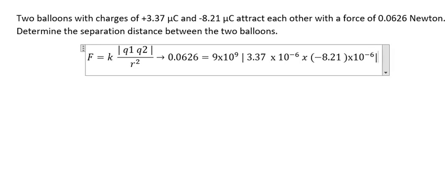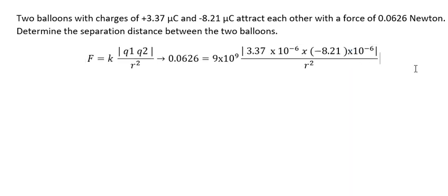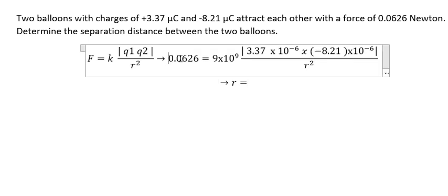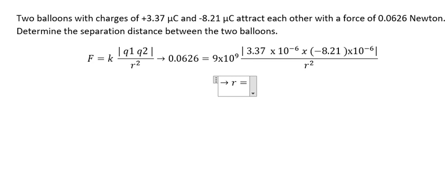Over r squared. Now we want to find r, so I'll rearrange the equation. Moving this to the left and these numbers to the right, then we take the square root of both sides.